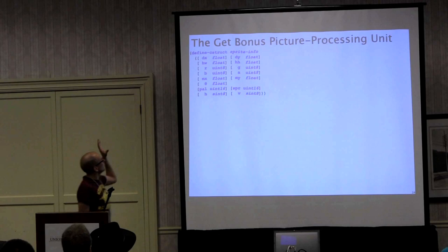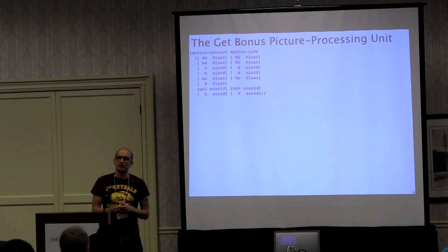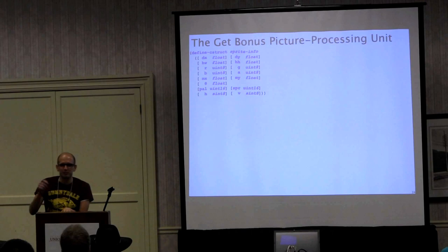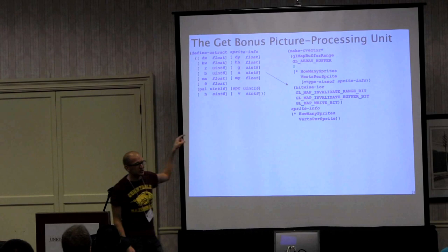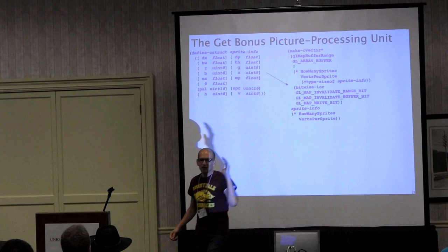Here's some code. We define a low-level C data structure that corresponds precisely to the memory going out to the graphics card — every one of these is 40 bytes, and we have six per sprite for 240 bytes. We use Racket's FFI to get a pointer to the memory of the graphics card. Figuring out which flags to ask for was incredibly painful to figure out, but those are the best flags.